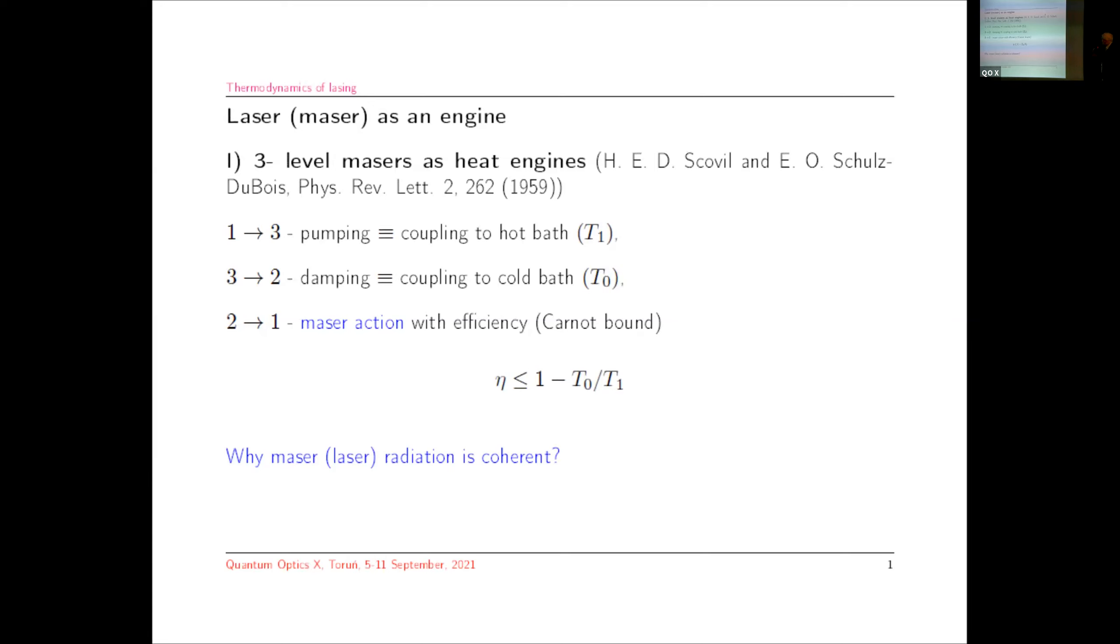This is treated as producing work. You see that these all transitions are on different footings. This maser action is related with producing energy at very low entropy and therefore it can be treated as work. Using this analogy, one can relate the efficiency of a maser action to Carnot bound. Of course, this is too simple a model to explain why this radiation of laser or maser is coherent. One needs more theoretical input to the case.